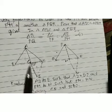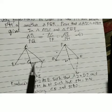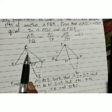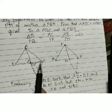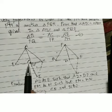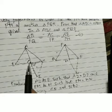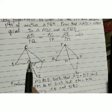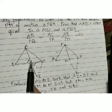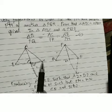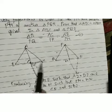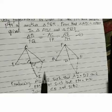By SAS congruency, triangle ABD is congruent to triangle CDE. After showing congruence, by CPCT we get AB = EC and angle ABD = angle ECD. This is equation 1.